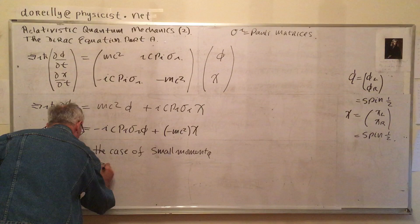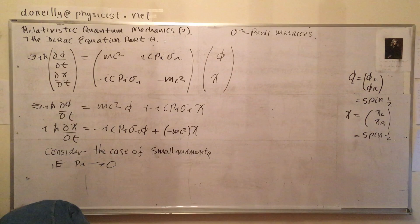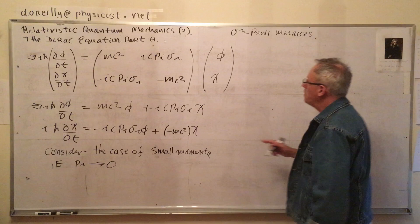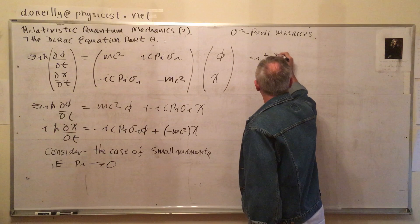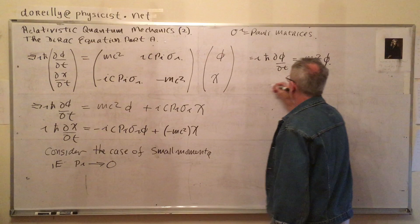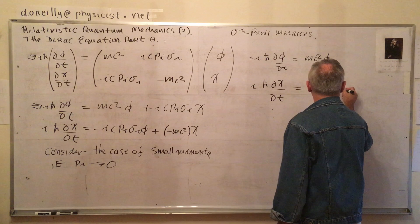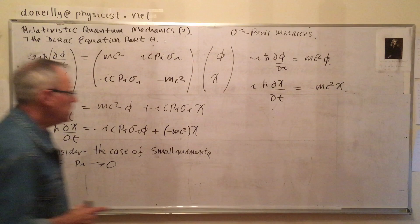We're going to consider the case of very small momenta. Very small momenta, but the mass hasn't disappeared. So for small momenta, this term and this term drop out, and I get phi and a negative mc² for the chi. That's what we get. Now get your heads around it. So these two equations, let's get rid of that now.